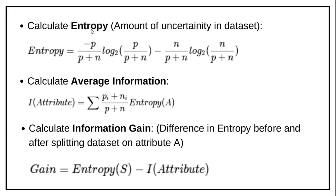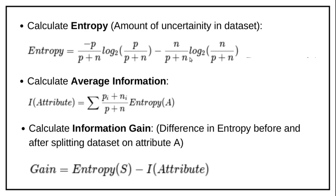Entropy tells about the uncertainty in the dataset. What does that mean? It means the balance between the number of positive and number of negative examples. For example, if we have equal numbers of positive and negative examples, the entropy will equal one. If we have only positive examples or only negative examples, then the entropy will equal zero.